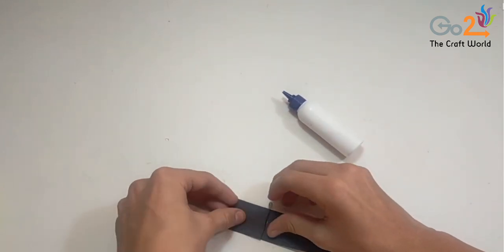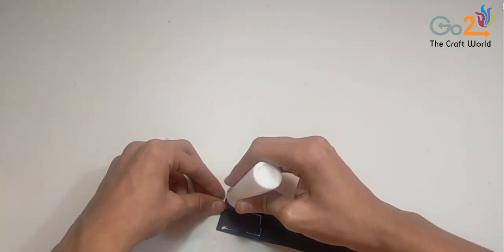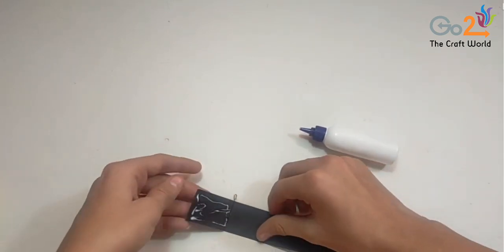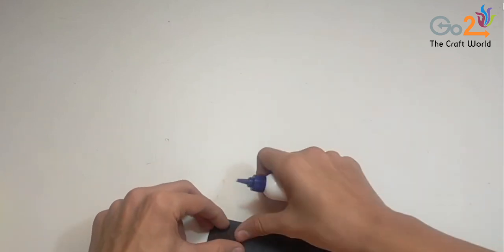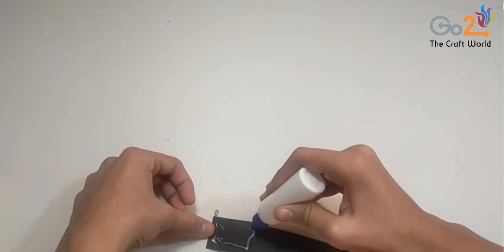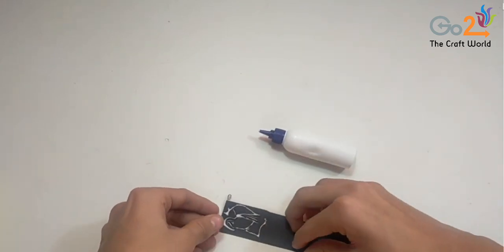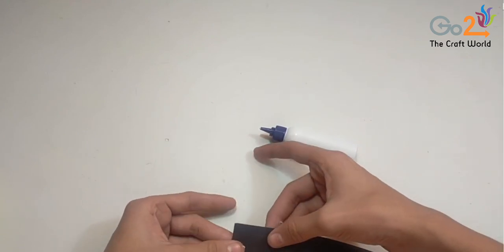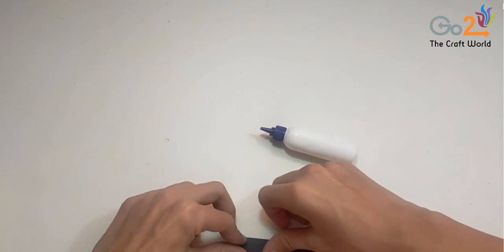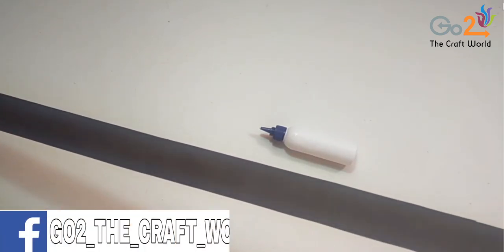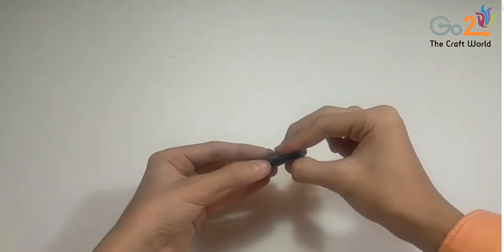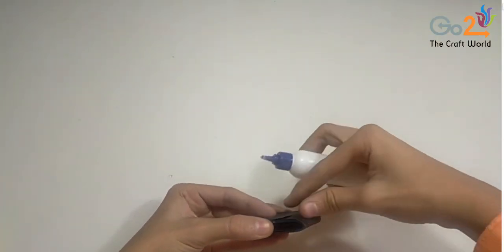We will fold and stick the sides, adding layers on each side similarly. It will look like this after completing. Now we will secure the end.